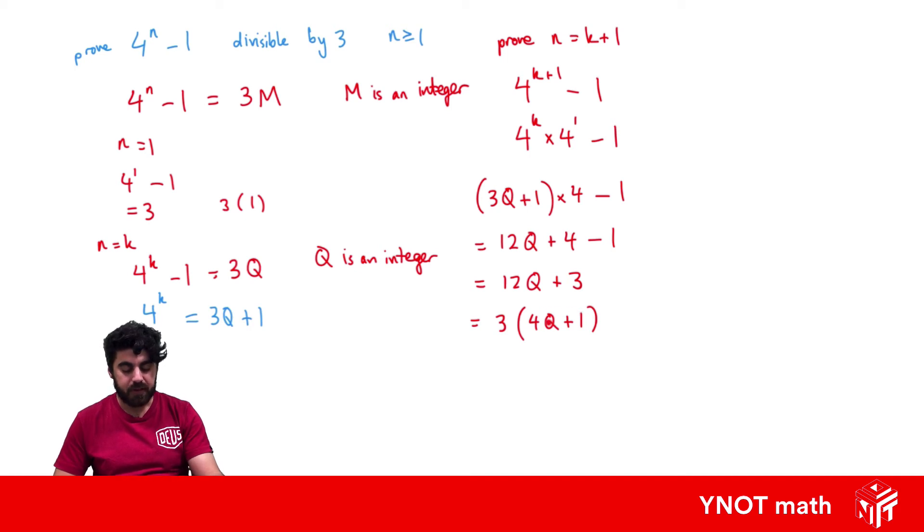And if q is an integer, 4 times an integer gives us an integer. Plus 1 also gives us an integer. So we could rewrite this as 3 times p, where p is an integer.